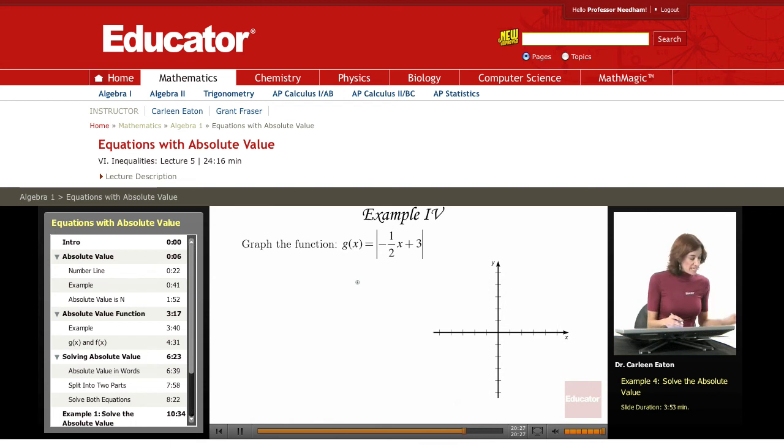Graph the function g(x) = |(-1/2)x + 3|. I know that I'm looking for a graph that's going to end in a V-shape. So I need to find points along here, points along here, and I also need to find the point of the V.